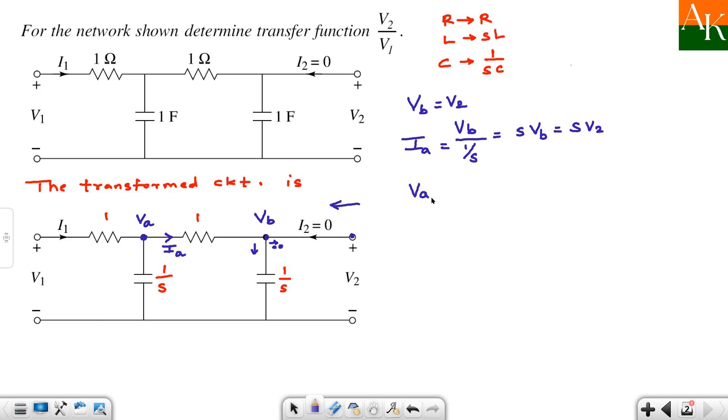Next, you have to write down about Va. So, here you will have current into this resistance. So, Ia into 1 plus next nodal voltage, that is nothing but Vb. So, substitute for Ia. So, this becomes S times V2 into 1 as it is, and Vb value is V2. So, you can take V2 common and you will have S plus 1 times V2. So, Va you have obtained.